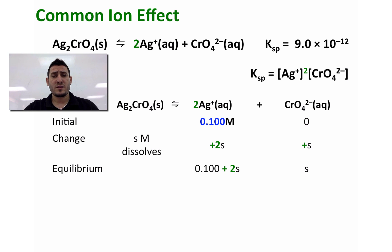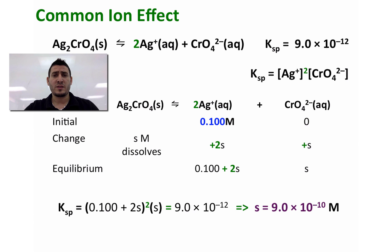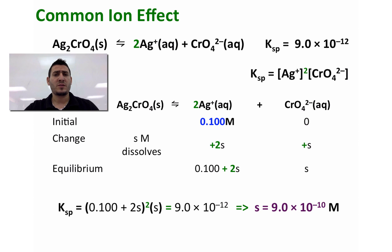Replacing these equilibrium concentrations into the expression of Ksp and doing the math, when we solve for s we find that the solubility of silver chromate is equal to 9.0 × 10⁻¹⁰ molar. This is the solubility of silver chromate in 0.1 molar silver nitrate.